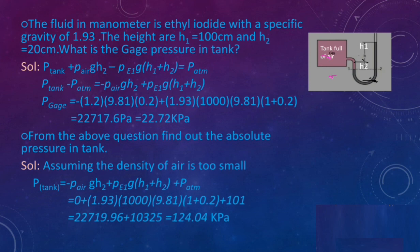Problem 4: From the above question, find the absolute pressure in the tank. Assuming the density of air is negligible, P_tank = −ρ_air·g·H2 + ρ_EI·g·(H1 + H2) + P_atm. Substituting the values, the absolute pressure in the tank is 124.04 kPa.